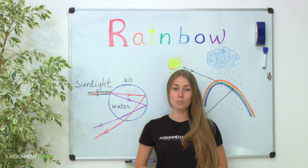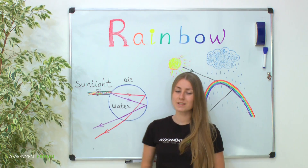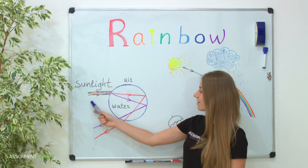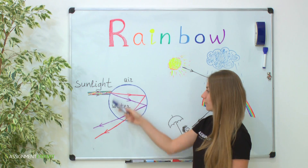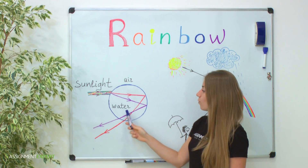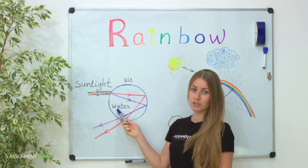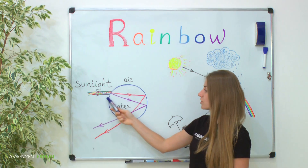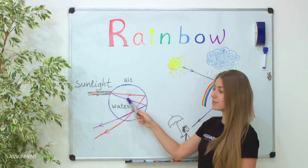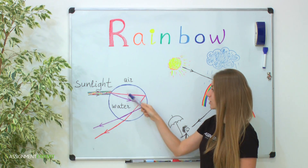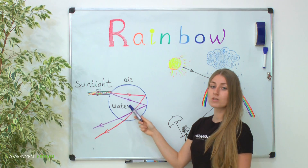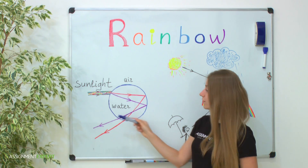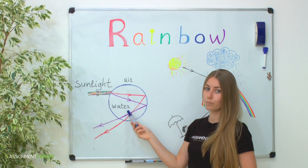Now the optics come into play. Consider a light ray which comes from air and falls onto a water drop surface. Water has a greater index of refraction than air. So when light crosses the air-water boundary it refracts and decomposes into its constituents because of the dispersion phenomenon. Therefore, inside a raindrop a small rainbow occurs.